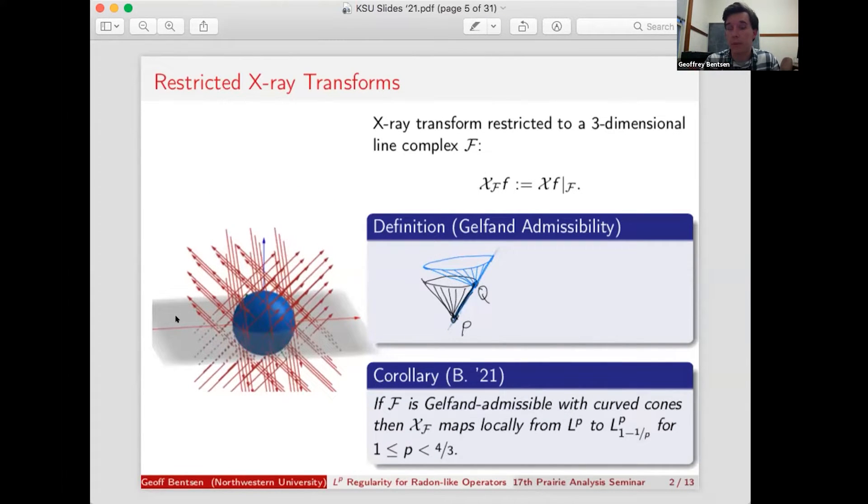The reason I'm talking about this operator in such detail is a corollary of my main result says that if you have a restricted x-ray transform, and F is Gelfand admissible such that these cones through each point are curved, then this restricted x-ray transform maps locally from LP to LP 1 over P for small values of P, and this LP Sobolev regularity is sharp.